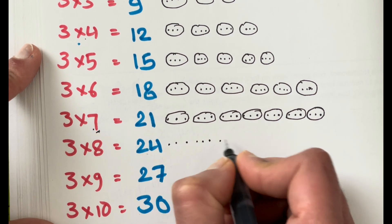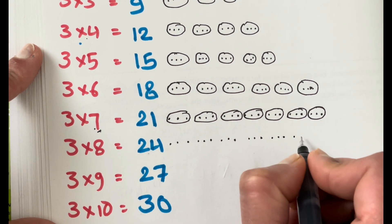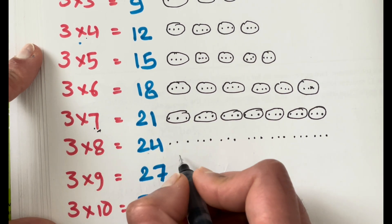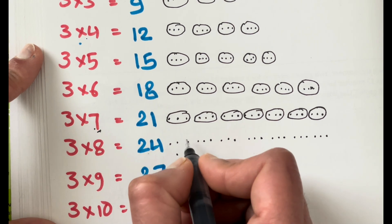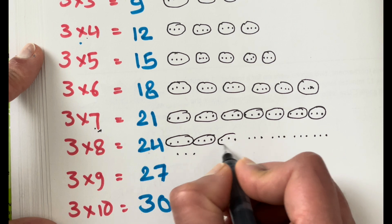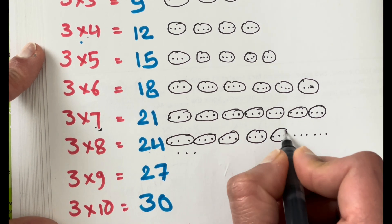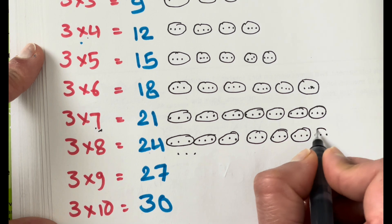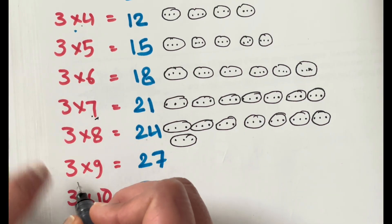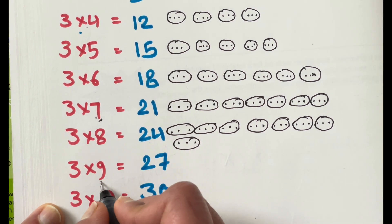Three times eight is twenty-four. One, two, three, four, five, six, seven, eight, nine, ten, eleven, twelve, thirteen, fourteen, fifteen, sixteen, seventeen, eighteen, nineteen, twenty, twenty-one, twenty-two, twenty-three, twenty-four. One group, two group, three group, four group, five group, six group, seven group, and eight groups. Three times nine is twenty-seven — we will make nine groups.